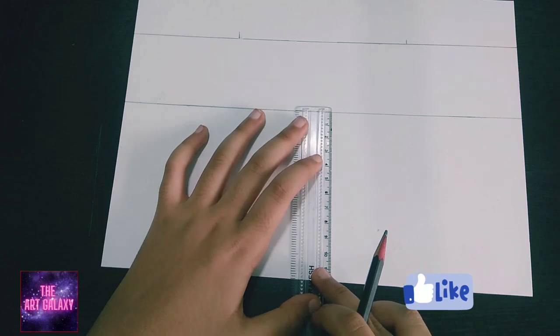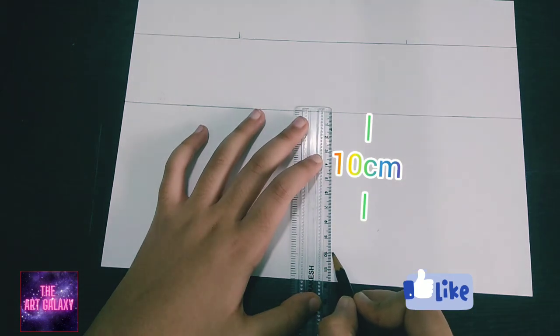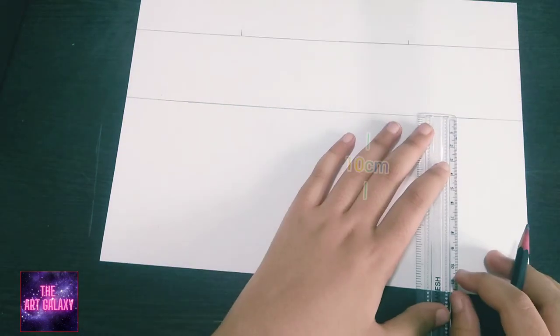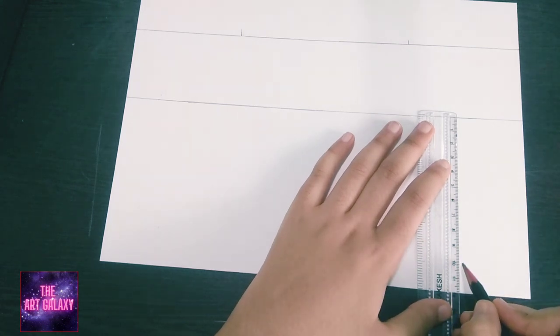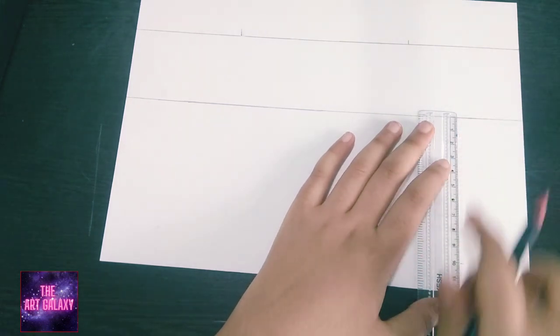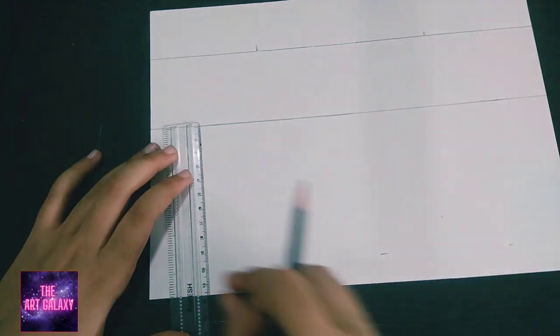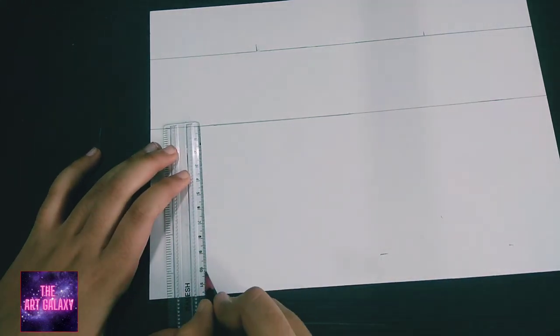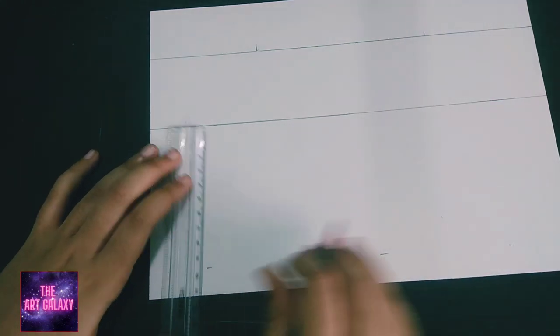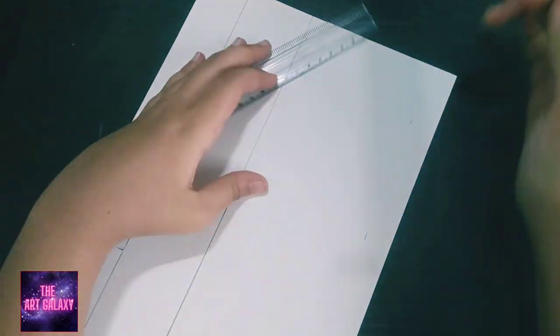Now we have to mark another vertical distance of 10 centimeters from the second line which we have drawn. Again, repeat the steps and draw three points, and then join those three points to make a straight line. Make sure these points are quite correct and the line is quite straight.